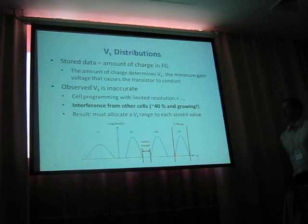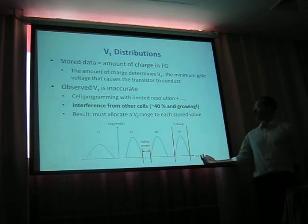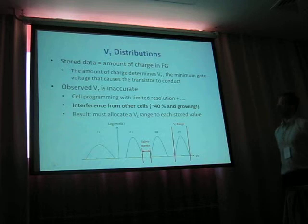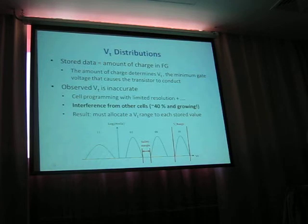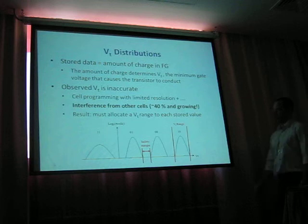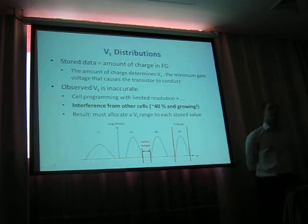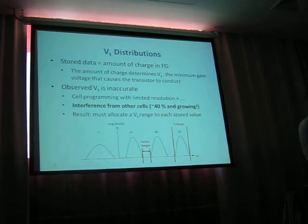As a result, we must allocate a Vt range for each stored value in the flash memory cell. Note that distribution's width is actually the factor that determines the number of bits we can store per cell.